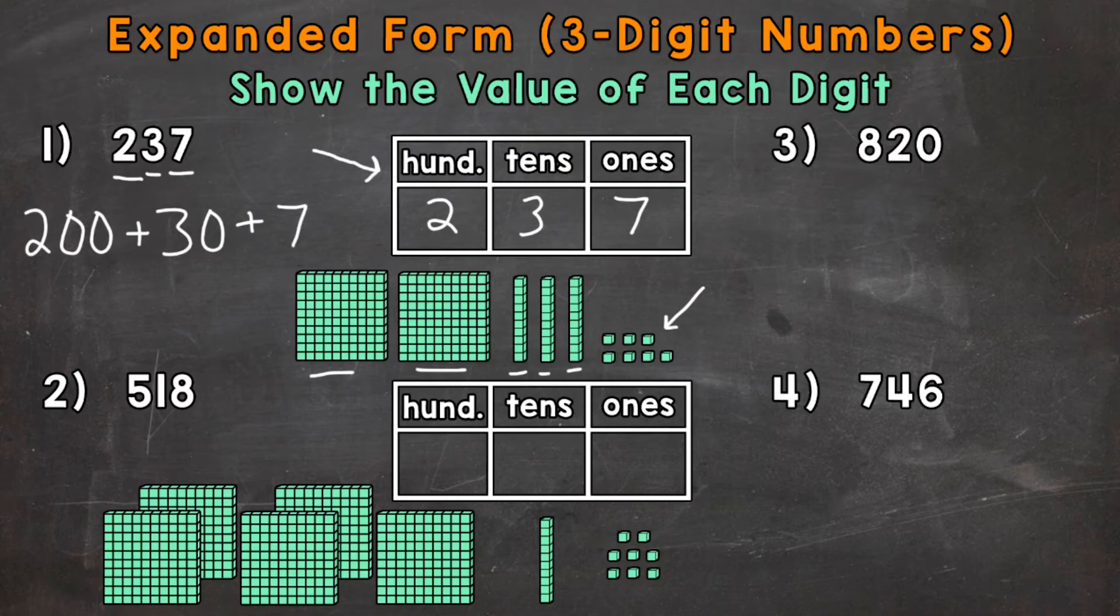So to recap, the 2 has a value of 200 because it's in the hundreds place. The 3 has a value of 30 because it's in the tens place. And the 7 has a value of 7 because it's in the ones place.